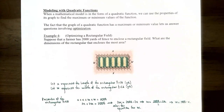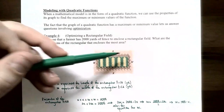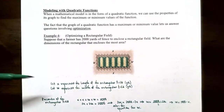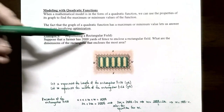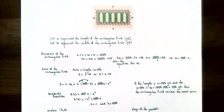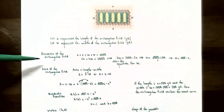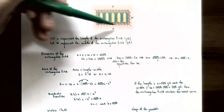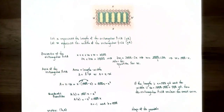Example 4: optimize a rectangular field. A farmer has 2,000 yards of fence to enclose a rectangular field. What are the dimensions that enclose the most area? Let x represent the length and w represent the width of the rectangular field, both in yards. The 2,000 yards of fence represents the perimeter, so x + w + x + w = 2x + 2w = 2,000.